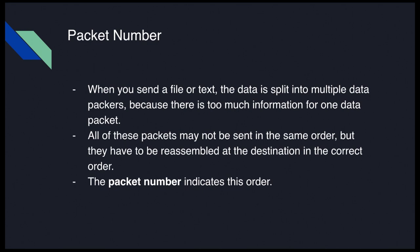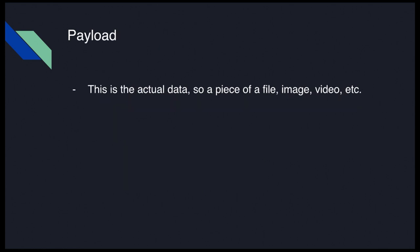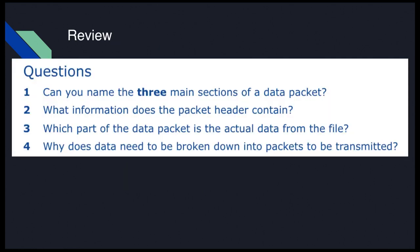So to summarize: when you send a file or text, it's split into multiple data packets, each with a packet number, payload, and trailer. Before we move on, make sure you can answer the basic review questions. For example: why does data need to be broken down into packets? Mainly because data is quite large and needs to be broken into separate pieces depending on the network, in order to be transmitted quickly and efficiently.